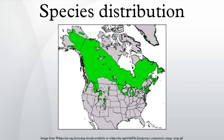Species distribution is the manner in which a biological taxon is spatially arranged. Species distribution is not to be confused with dispersal, which is the movement of individuals away from their area of origin or from centers of high population density. A similar concept is the species range, which is often represented with a species range map.